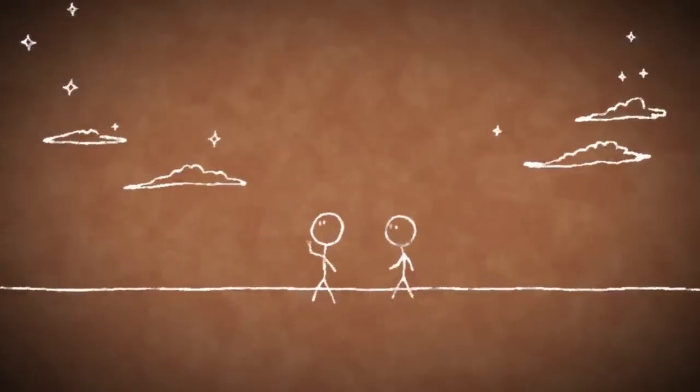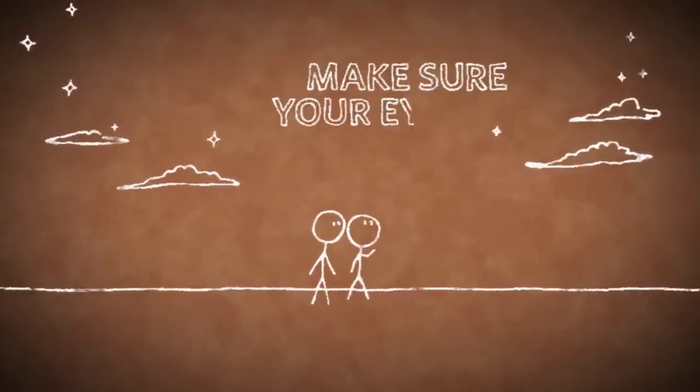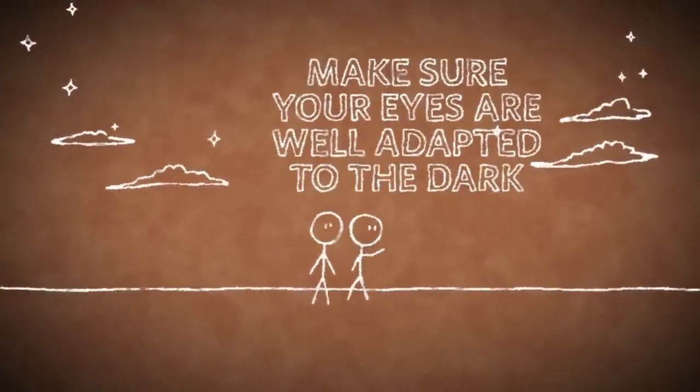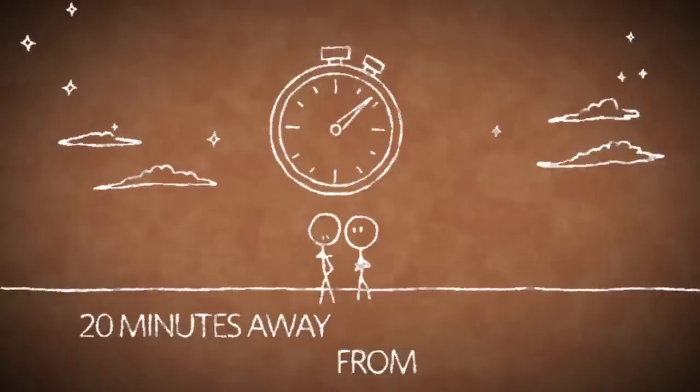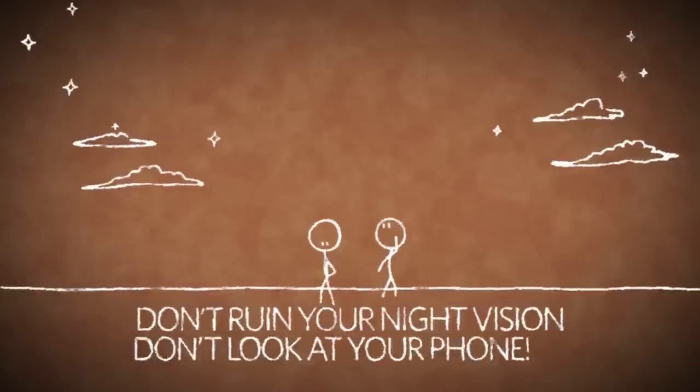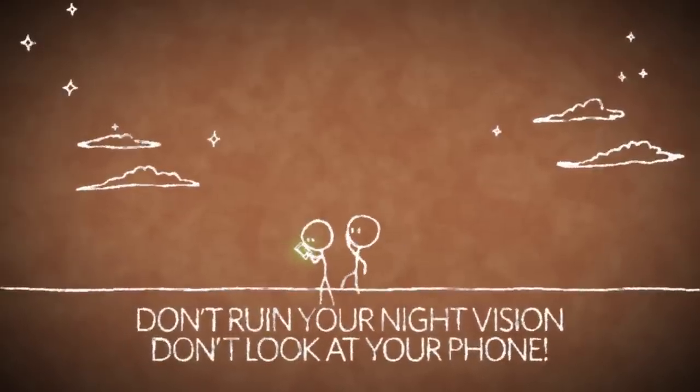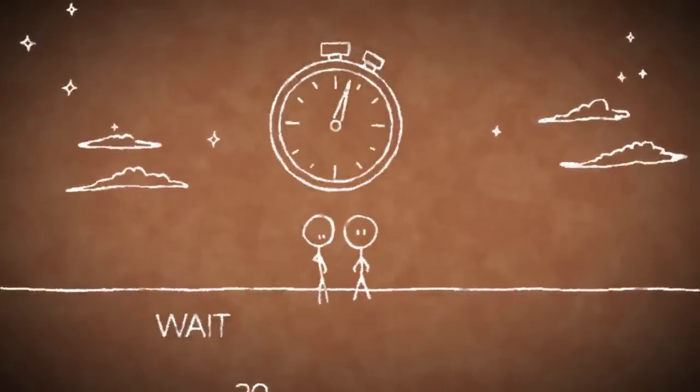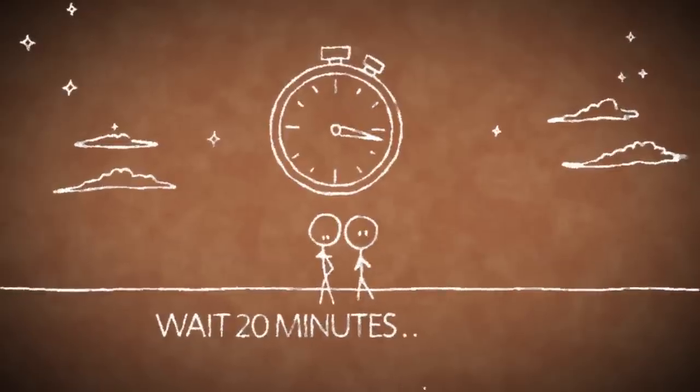Since many meteors can be faint, make sure that your eyes are well adapted to the dark. This usually takes about 20 minutes away from bright lights and don't spoil your night vision by pulling out your cell phone and tweeting how many meteors you see. Then you'll have to wait another 20 minutes for your eyes to adjust to the dark again.